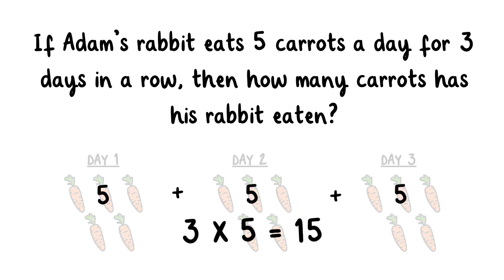Adam's rabbit has eaten 15 carrots. To work this out, you could use repeated addition, which is five plus five plus five, which equals 15, which of course is the same as five times three.